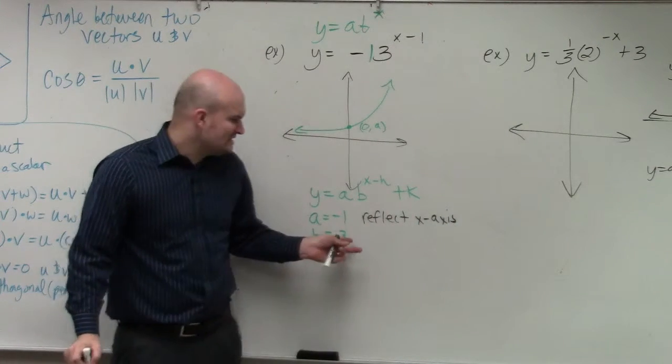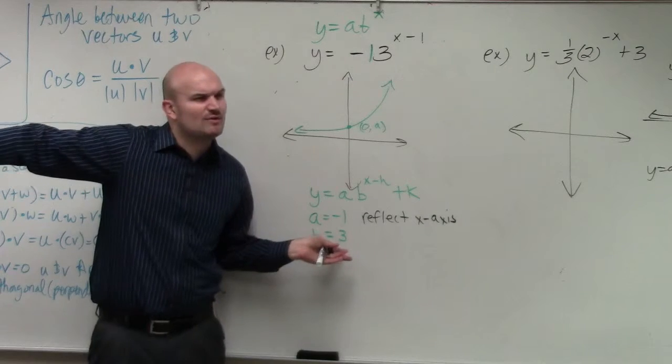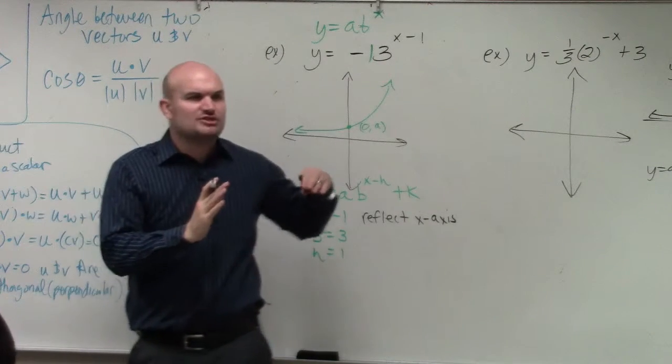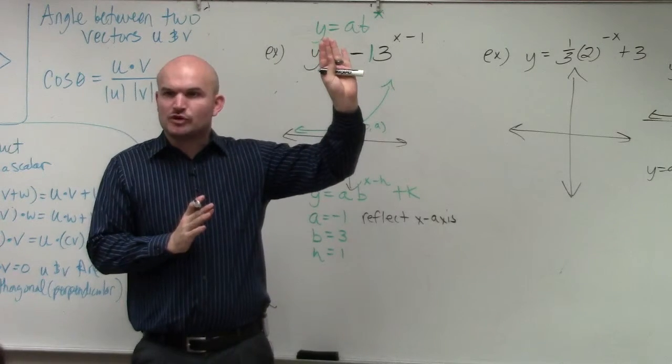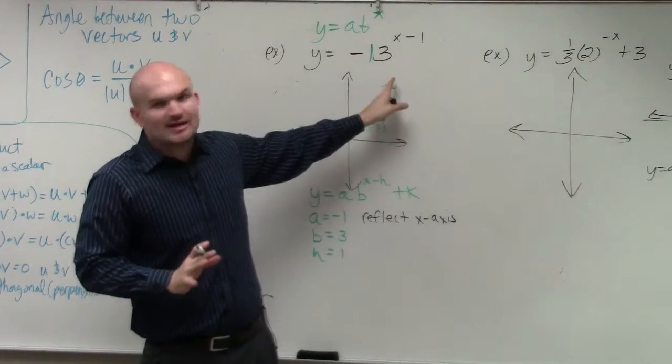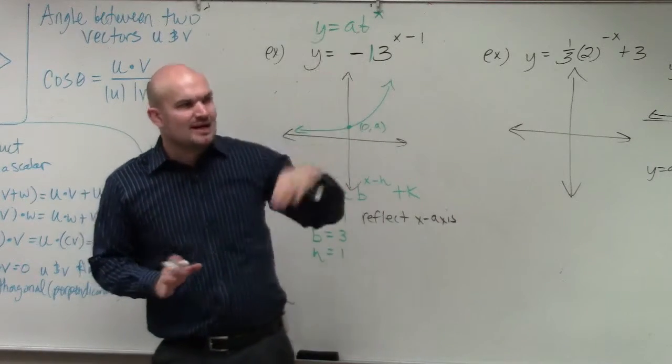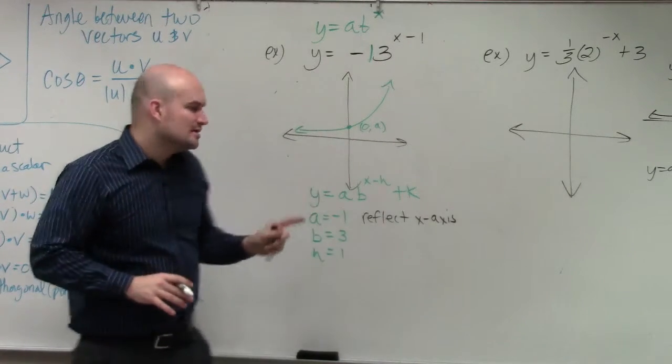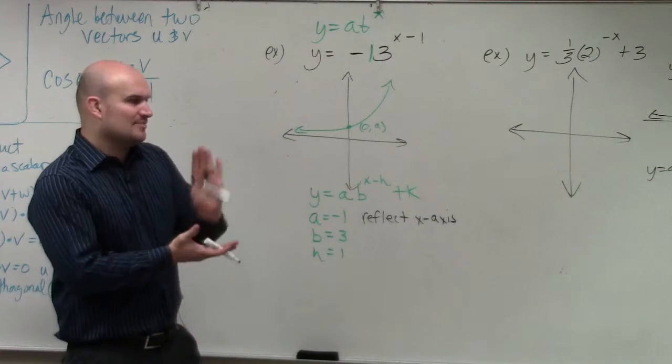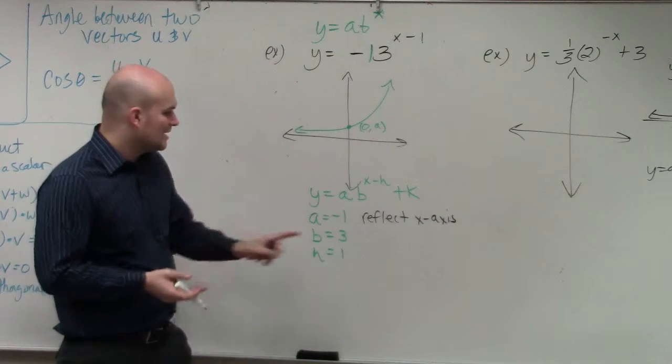Do you guys remember what did b do? Do you guys remember when we did the graphs on the TV? All b did was just determine how fast the graph grew. So b is not really a transformation. It's just a way to determine how fast the graph is growing. So b is not really going to have an effect on a graph.